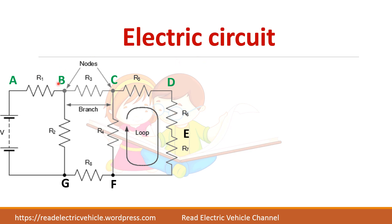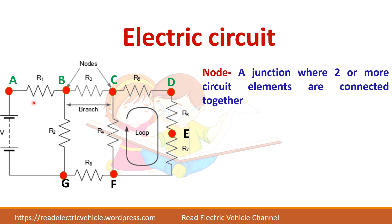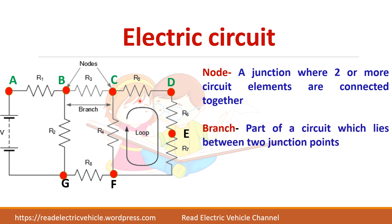Let us see some of the terms used in an electric circuit. In this circuit there are points marked as A, B, C, D, E, F, and G — they are called nodes. A node is a junction of two or more circuit elements. For example, node A connects the voltage source with resistor R1, and node B connects three resistors together.